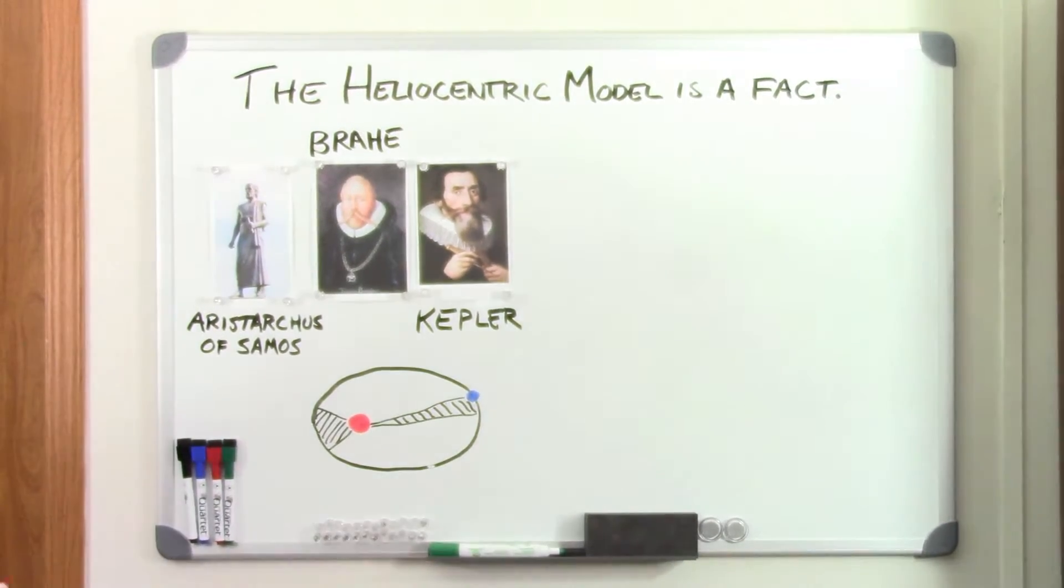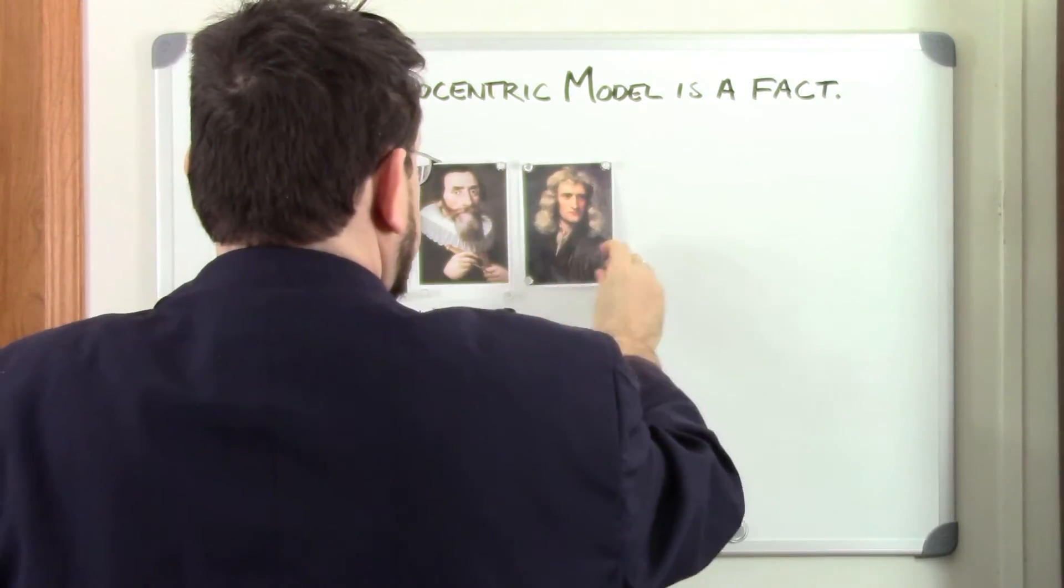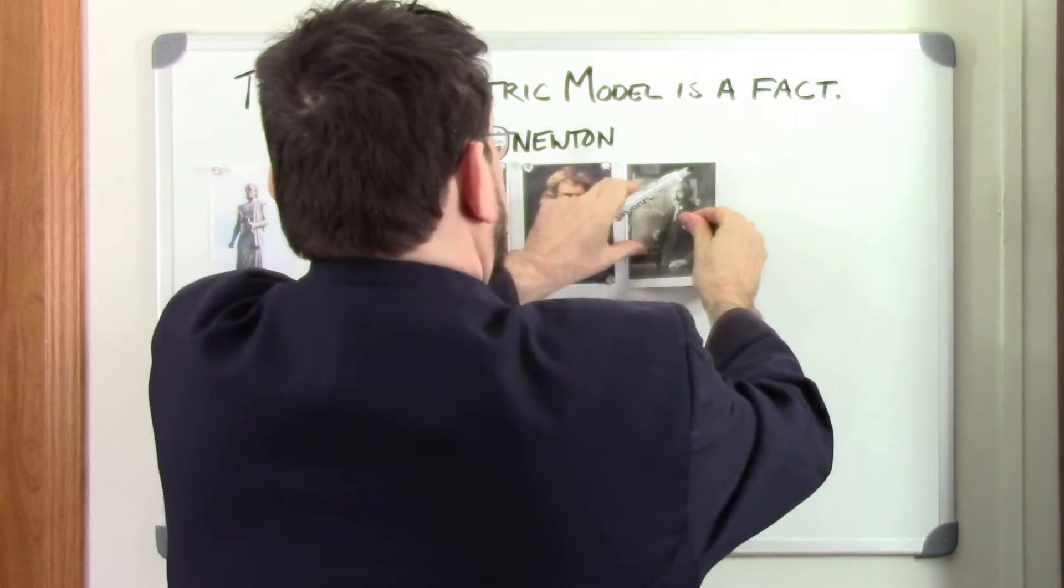The orbits were explained and refined by Isaac Newton's law of universal gravitation, and further explained and refined by Albert Einstein's general theory of relativity.